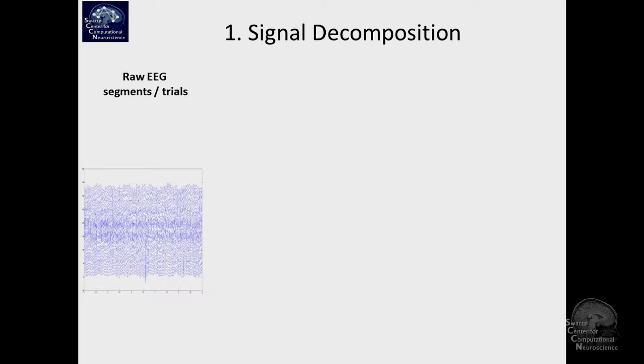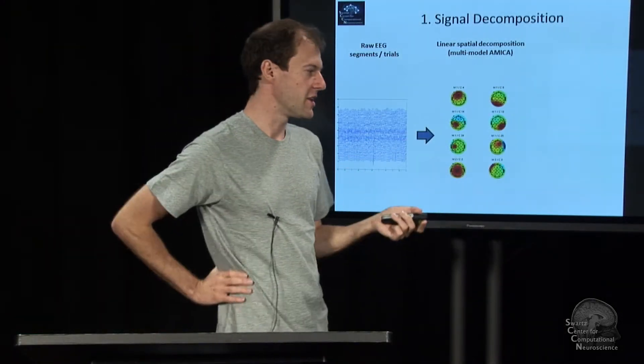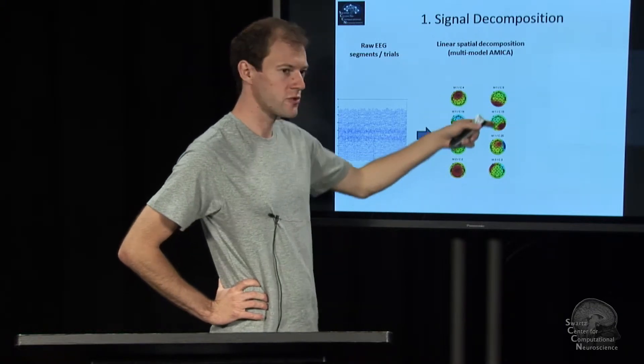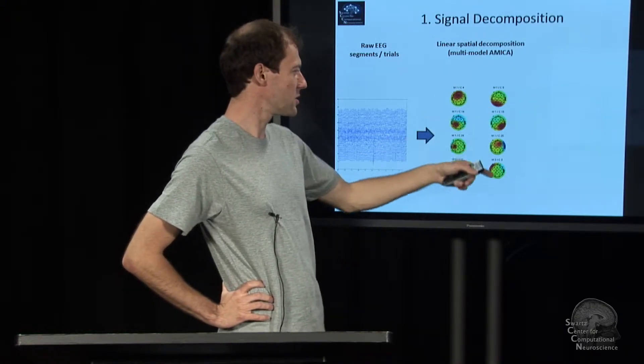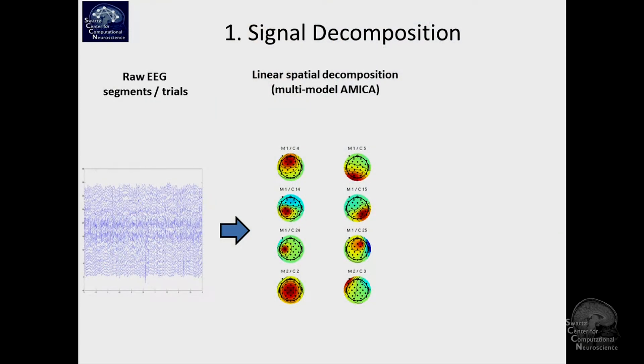So what we're doing is a three-stage thing. We are first decomposing the signal, the raw. This would be, say, one trial. We take this one trial, multiple channels, multiple samples, and we decompose it using an independent component analysis into multiple components. And these are some actual components from the real data. So they look pretty good. Here's a motor component. Here's a frontal, radial, central. This is probably an eye, lateral eye movement component, and so on.